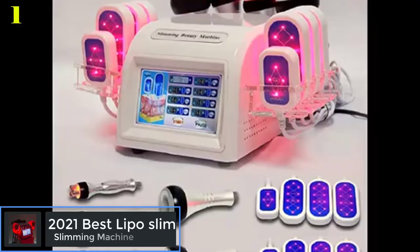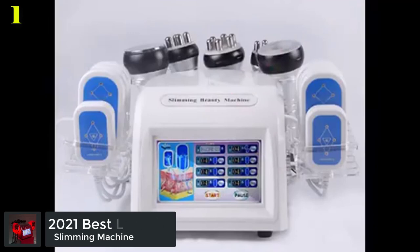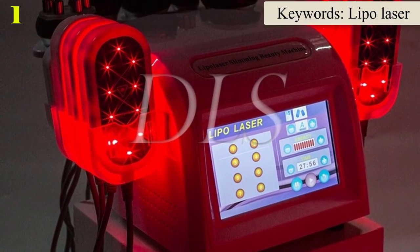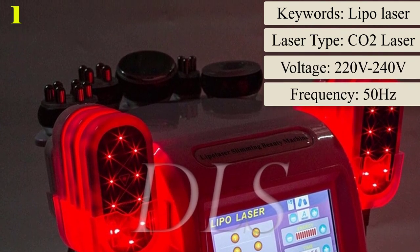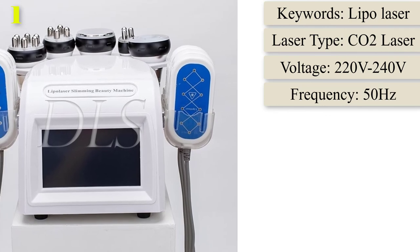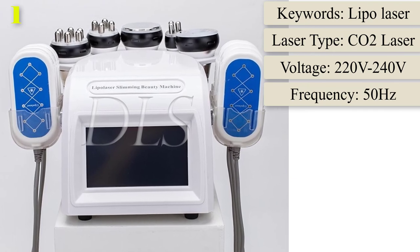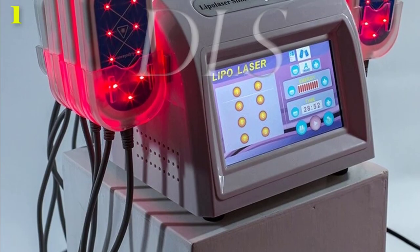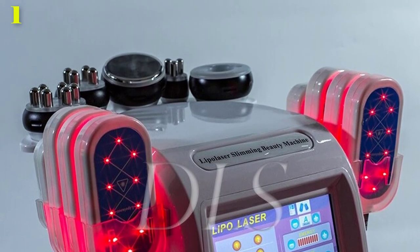Number 1: Best combination. Lipo Slim Laser Plus Cavitation Plus RF Plus Vacuum Cavitation Ultrasonic Lipo Laser Slimming Machine. Certification: CE. Origin: CN. Place of Origin: Guangdong, China. Laser Type: CO2 Laser. Feature: Skin Rejuvenation, Skin Tightening, Weight Loss. Frequency: 50 Hz. Power: 220W. MOQ: One Set. Keywords: Lipo Laser. Style: Portable. Certification: CE. Voltage: 220-240V. Function: Weight Loss. Warranty: 1 Year. So this is the best option for you to buy.